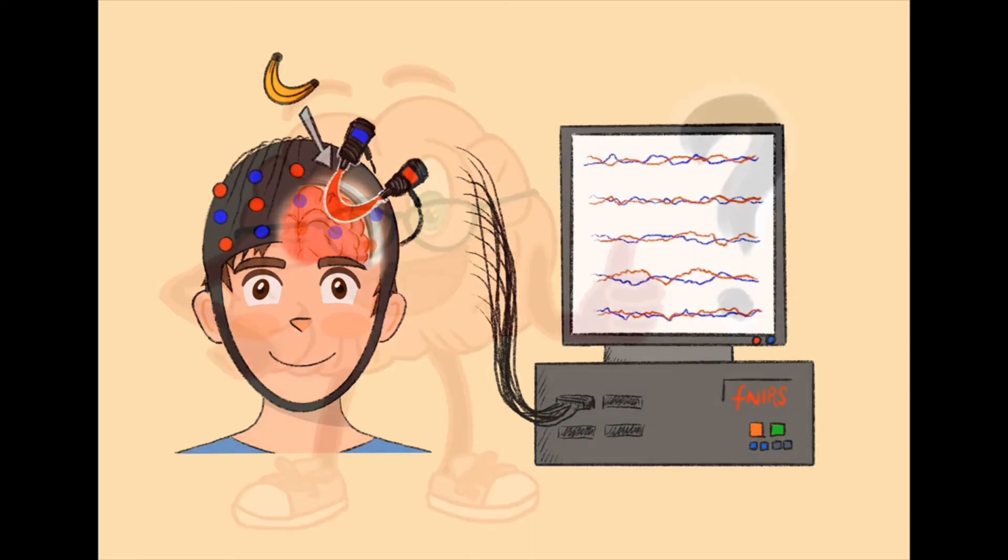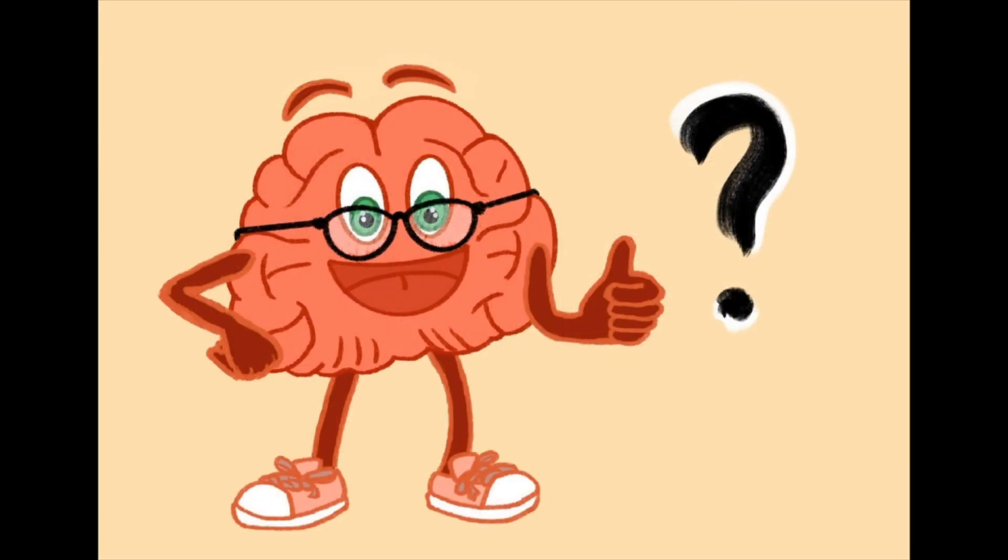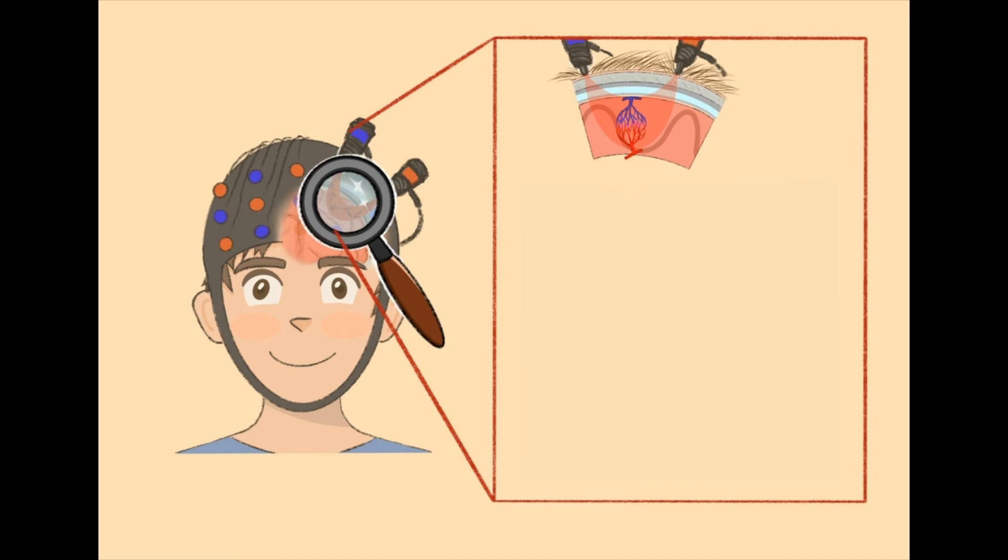But how can we use light to measure your brain's activity? To understand this, I will explain what happens in your brain when it is active. Just like yourself, your brain needs food and oxygen. When brain areas become active, they need even more fuel.